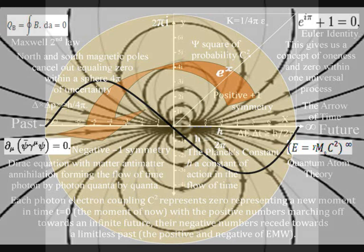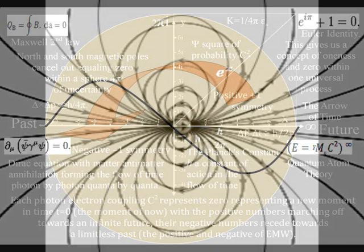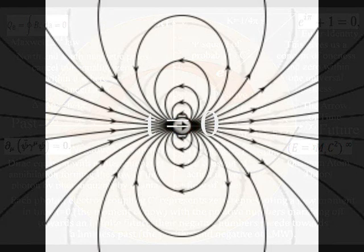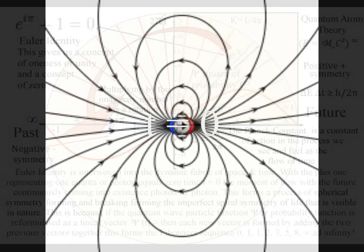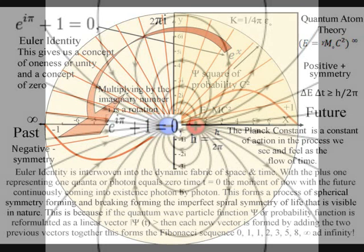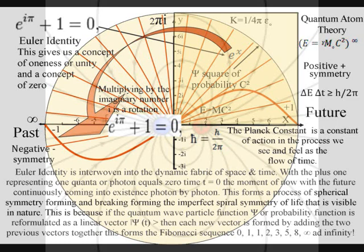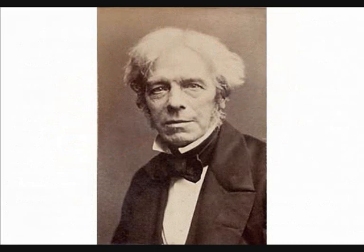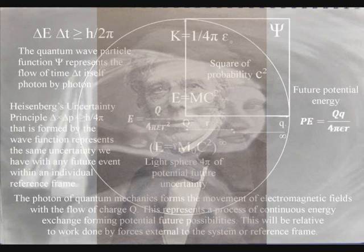As can be seen on the diagram, we already have 0 representing the moment of now, time equals 0, with positive 1 and minus 1 representing the positive and negative of electromagnetic waves. Therefore, we even have the start of the Fibonacci sequence in the diagram. This is linked to Euler's identity, giving this beautiful equation a place in the structure of space and time. To explain how the probabilistic nature of quantum mechanics can represent the potential possibilities and opportunities of everyday life, we have to use the mathematics of the electromagnetic force that is based on the work of Michael Faraday, because the light photon of quantum mechanics is also the carrier of the electromagnetic force, and this can be seen as one universal physical process.